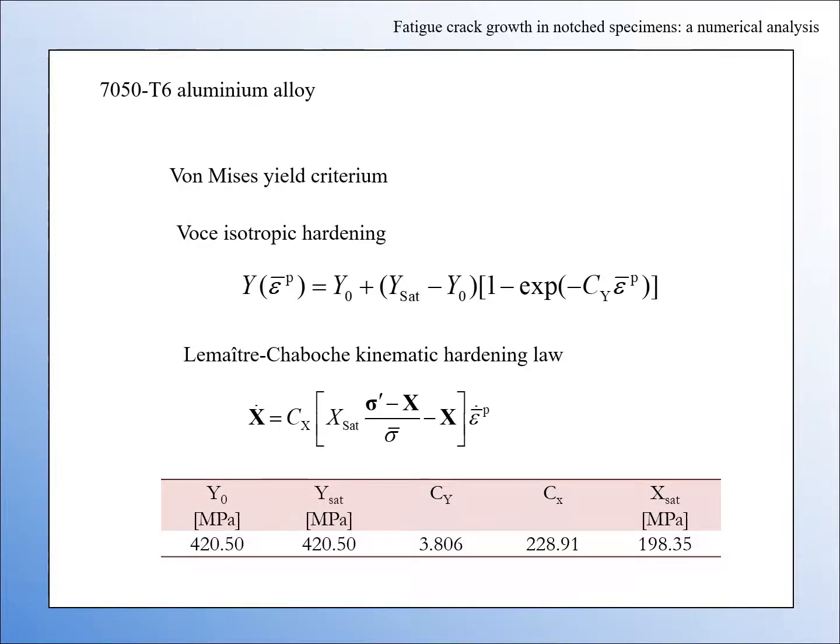The material studied was the 7050-T6 aluminum alloy. The elastic-plastic model assumed von Mises yield criterion, Voce isotropic hardening, and Lemaitre-Chaboche kinematic hardening law. The parameters can be seen in the table.